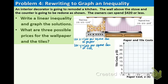As you have noticed in the picture, there is a tiled area and a papered, wallpapered area. So we're going to have our variables, x is going to be the cost per square foot of wallpaper and y is going to be the cost per square foot of tiles.